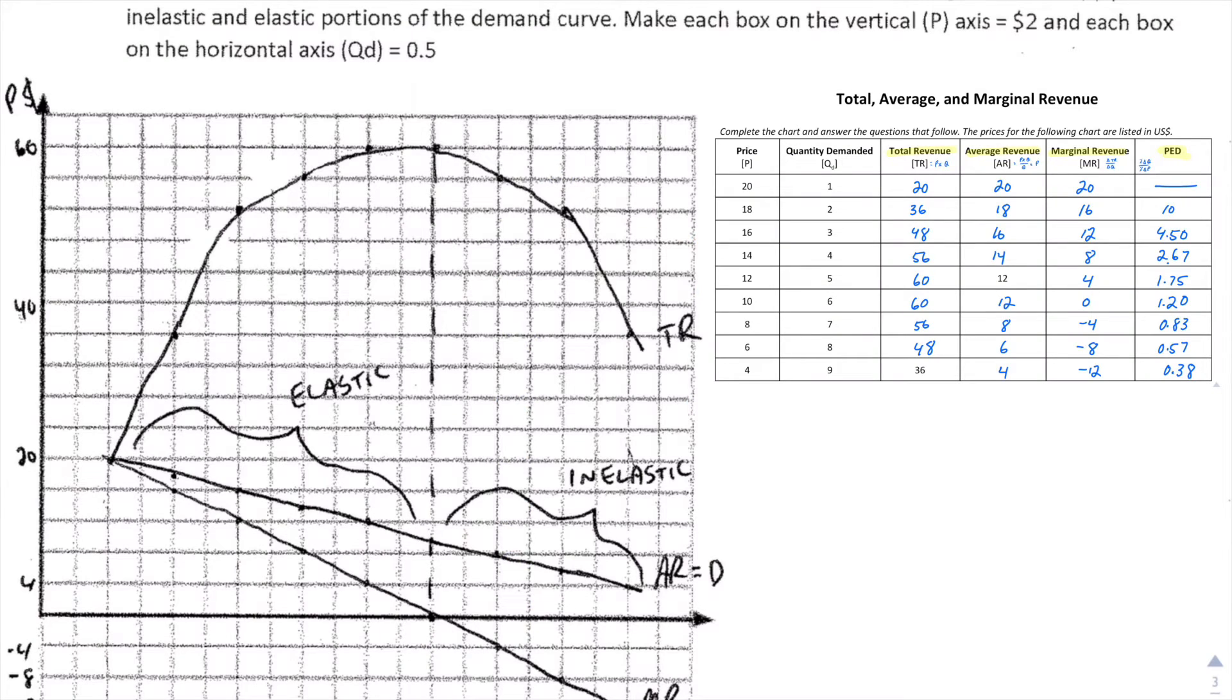Since I had done the data on the front side of the worksheet and the graph on the back, I wanted to put the two together now for you. The first graph I want to highlight is total revenue and you can see that the total revenue curve goes up, reaches an apex and then starts coming back down.